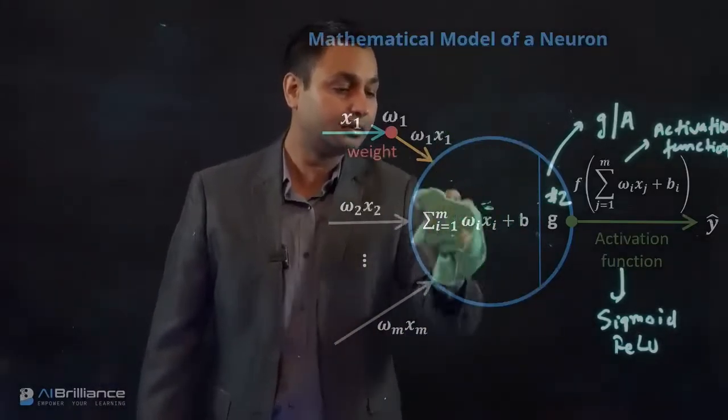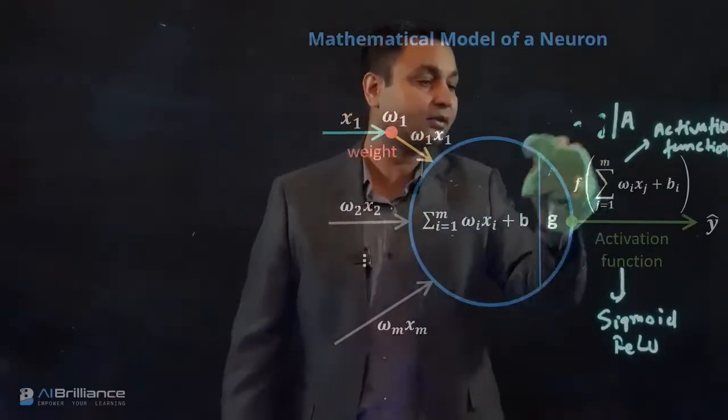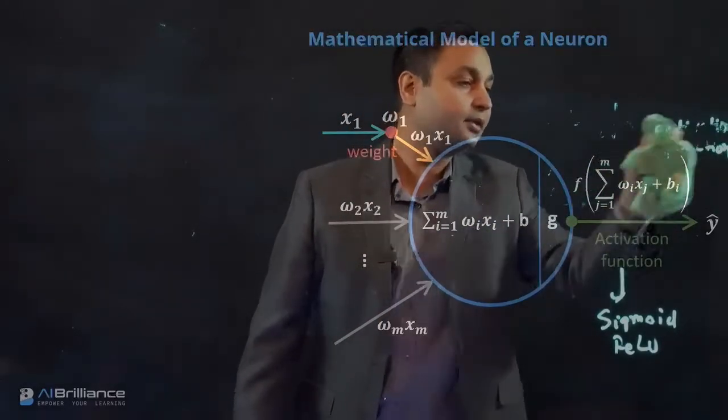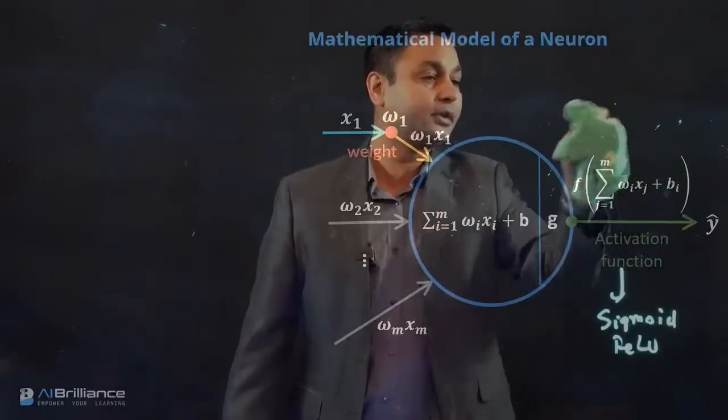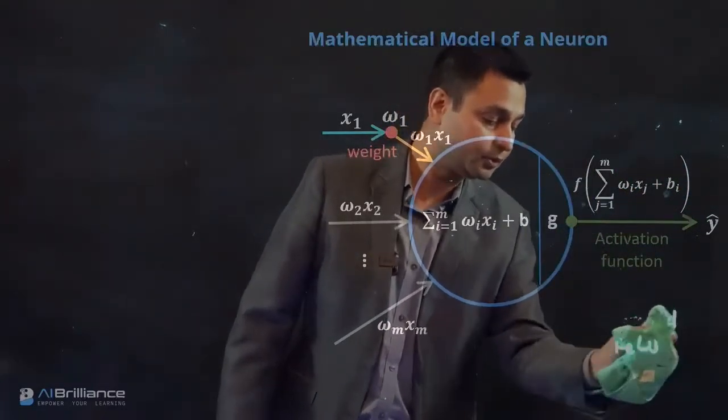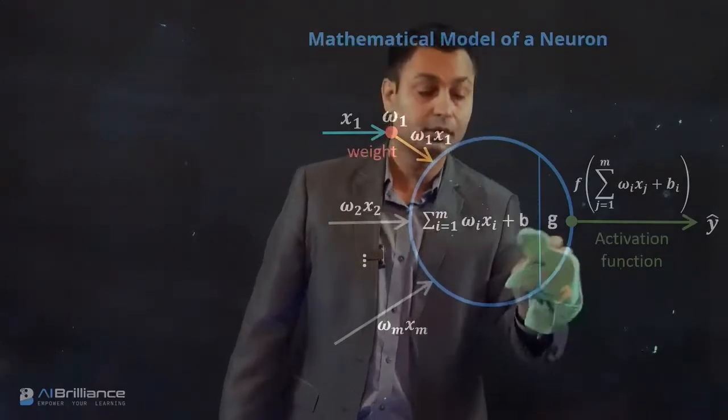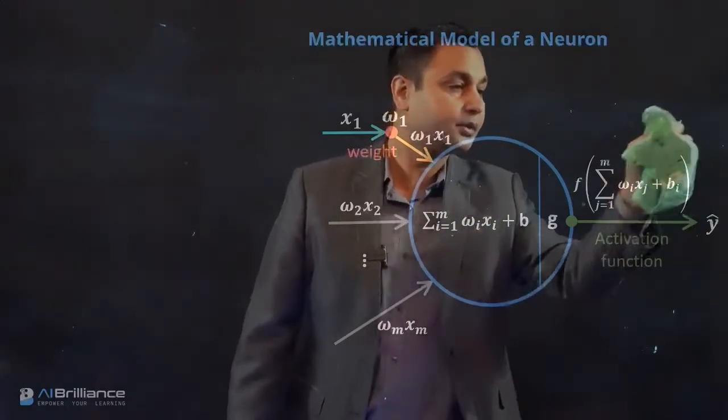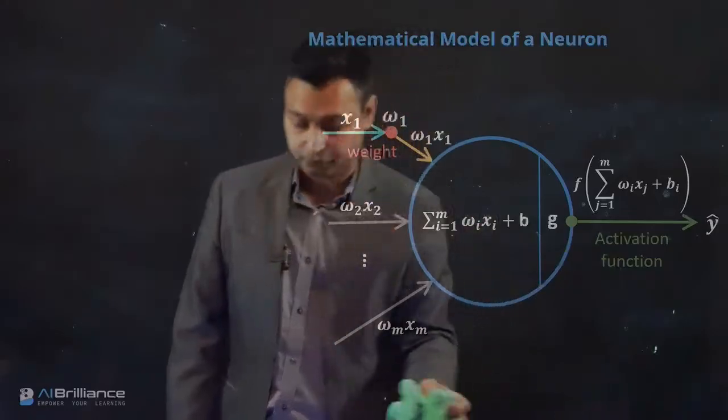So that is, in a nutshell, the mathematical or the computational model of the neuron, which does these two simple calculations and passes that information to the next layer. And also, as you'll see in some cases, this information could be used to also do the back propagation step. So with this, we covered what is the simple mathematical model of a neuron.